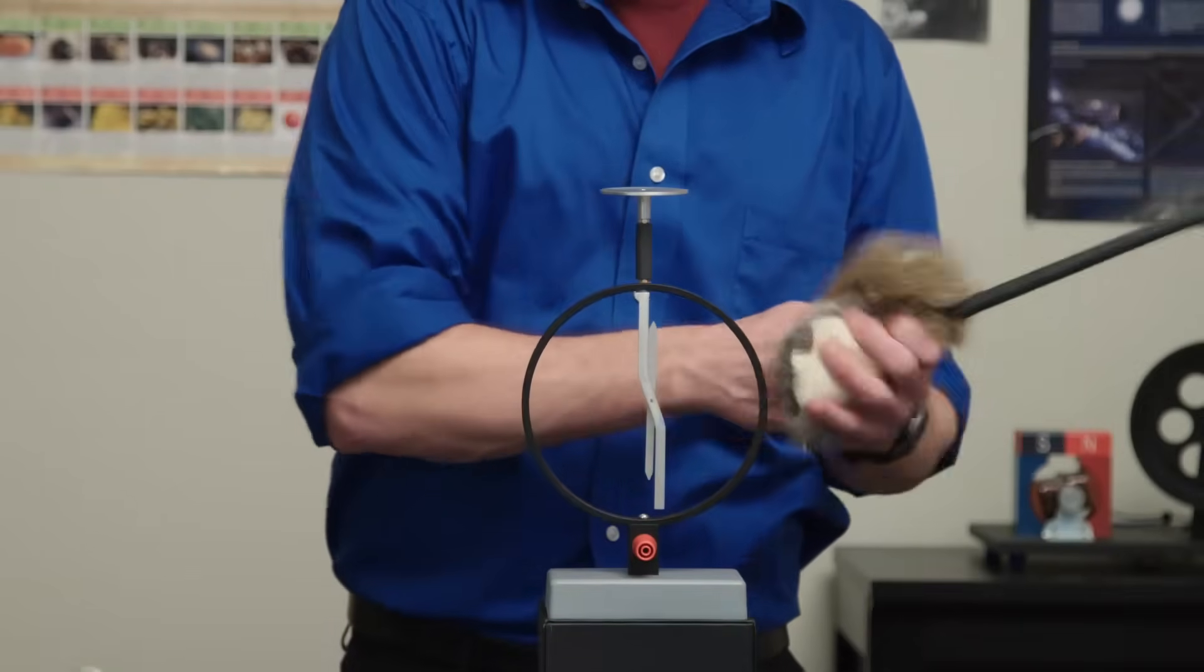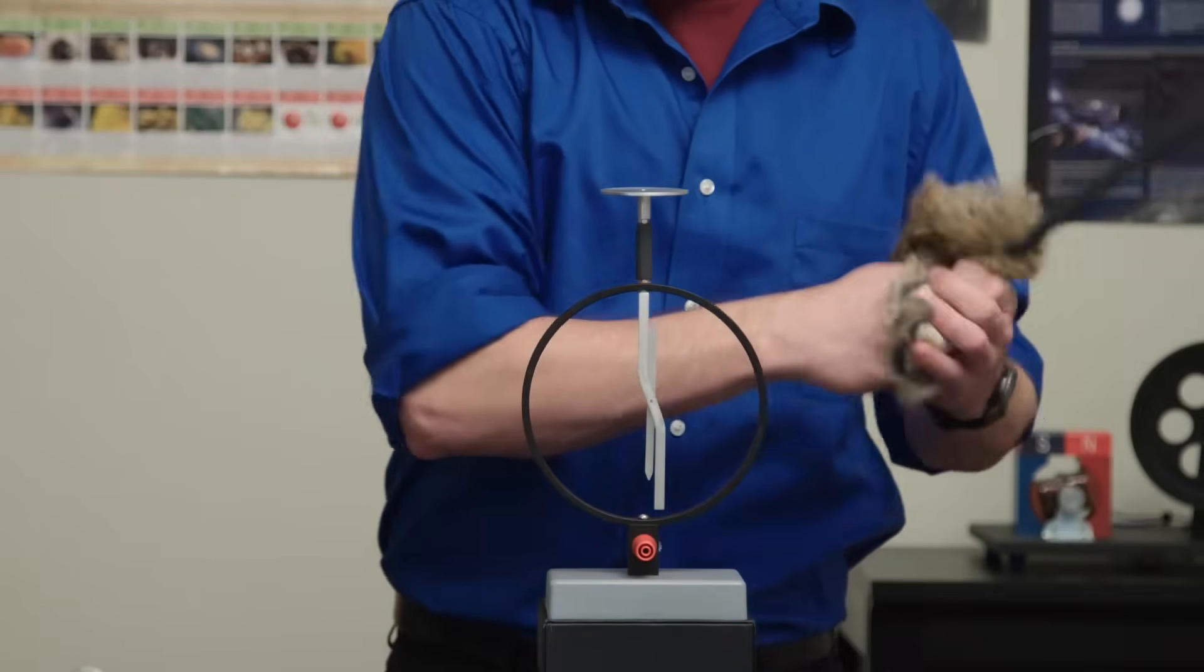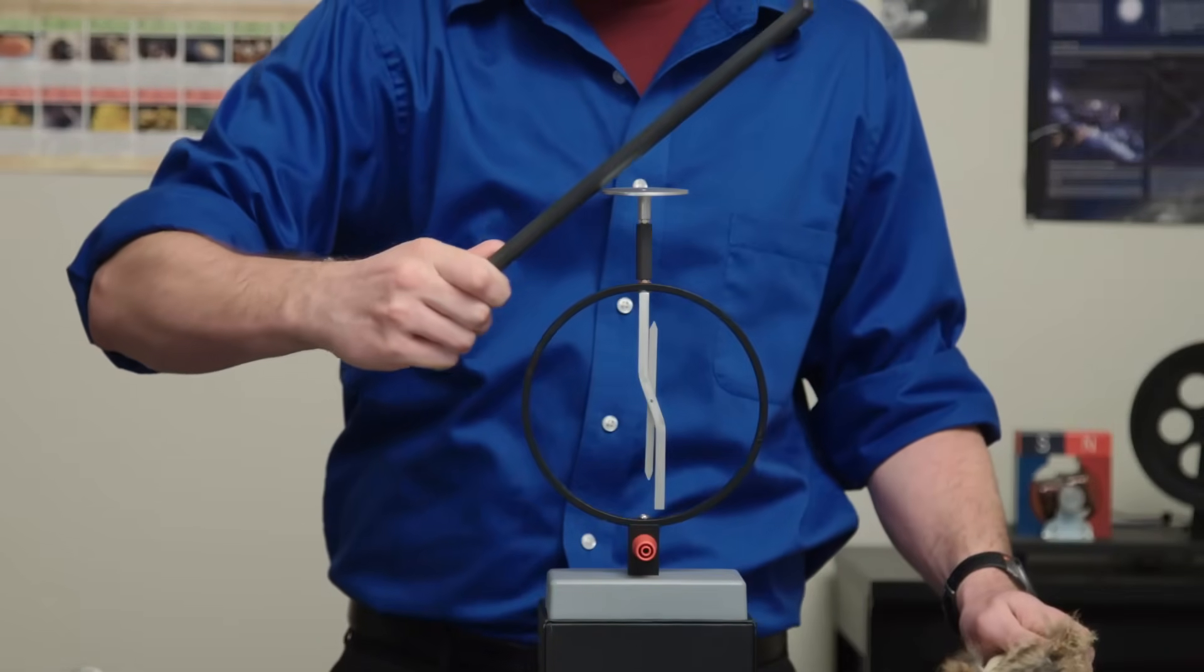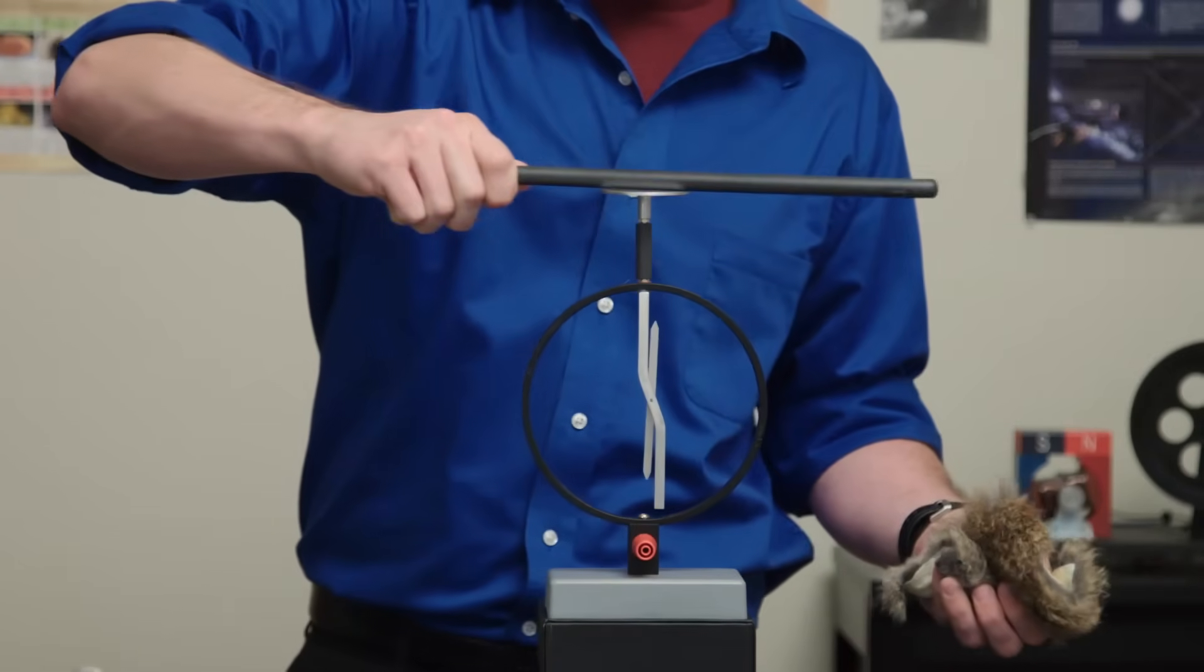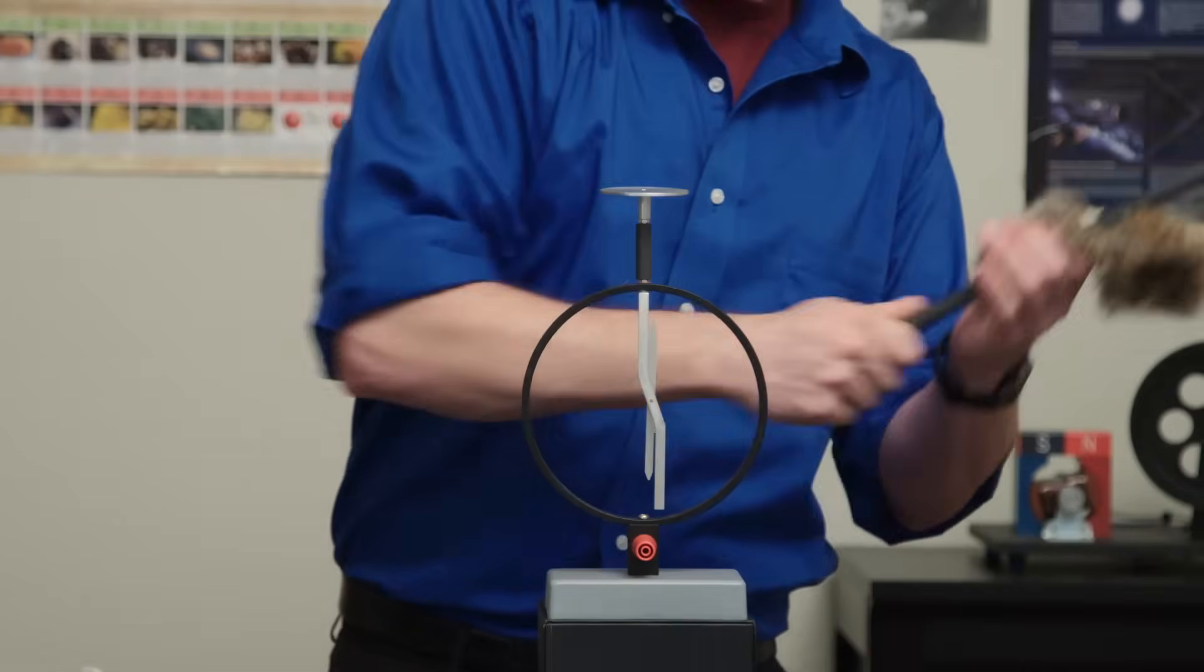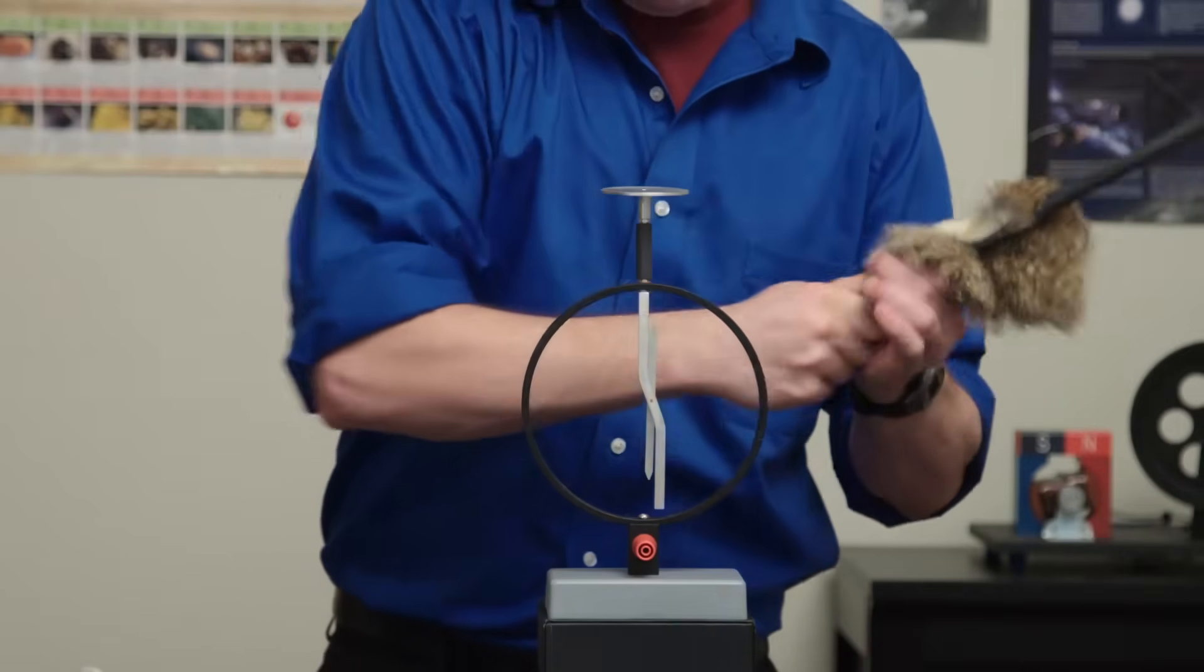It's usually easier to charge the electroscope negatively than it is to charge it positively. Rabbit fur on any form of plastic or latex can provide negative charge. Plastic cling wrap and a wood meter stick or a Funfly stick gives a good positive charge.